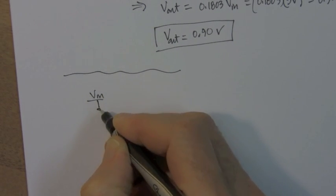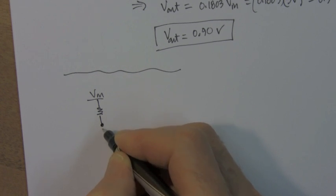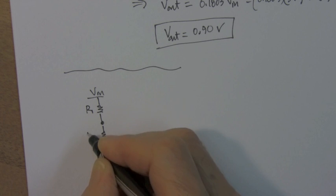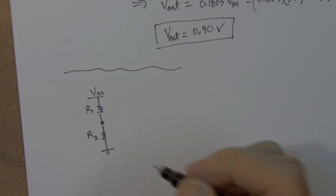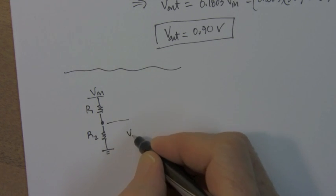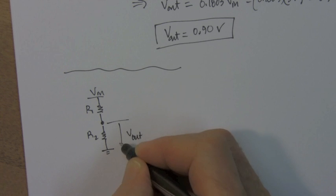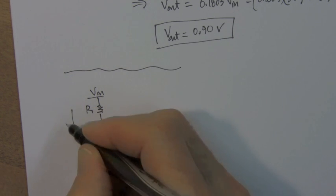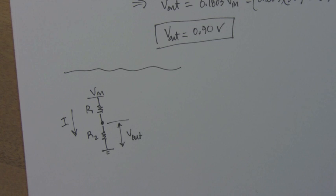VIN supplies power to this circuit. And we've got R1 and we've got R2. And we're coming off VOUT, which is the voltage across the bottom. Now, the current is the same through both of these resistors. That's important. They're connected in series.